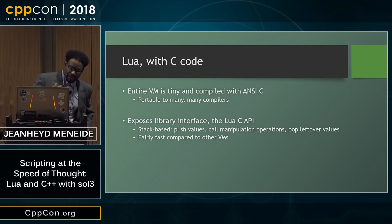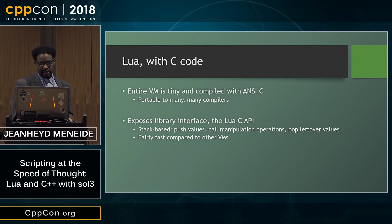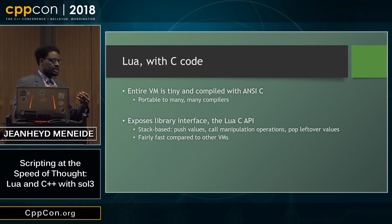Lua comes with a library. It compiles as a static or dynamic library. It's stack-based, so you push values, call manipulation operations to mess with the stack, and pop any leftover values or pop off the things you want to inspect or control. And it's fairly fast compared to pretty much all other VMs. It beats out JavaScript by a good chunk. It tackles most of the scripting languages by storm and is usually at the top of most scripting benchmarks out there. So it's a very competitive scripting language, which makes it very suitable to put in even high-performance computing applications.